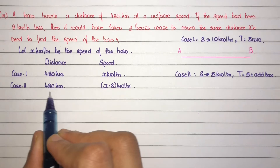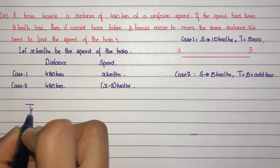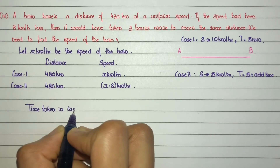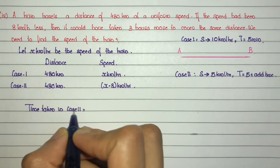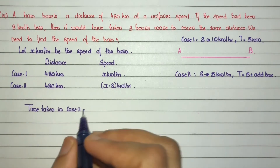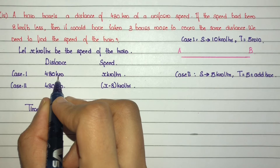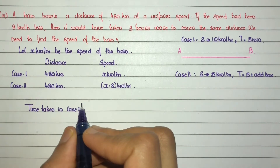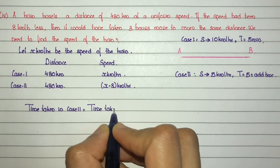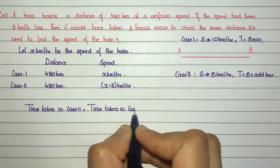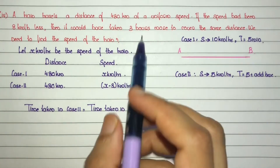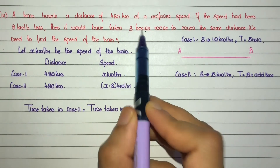Time taken in case 2 to cover 480 km equals time taken in case 1 plus some additional time. It is given that the additional time is 3 hours.